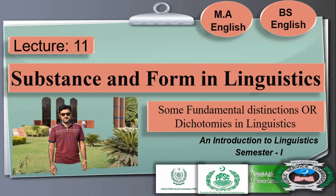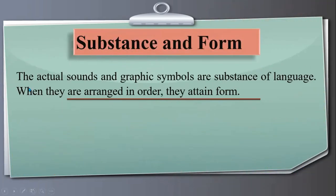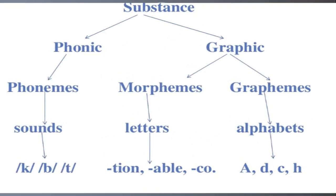Here you see substance and form. The actual sounds and graphic symbols are substance of language. When they are arranged in order, they attain form. In this picture, these sounds and graphic symbols are the substance of language, but when they are arranged in order they attain form like 'bat,' 'nation,' 'drum.' We arrange these chunks into complete language and out of letters we arrange words.